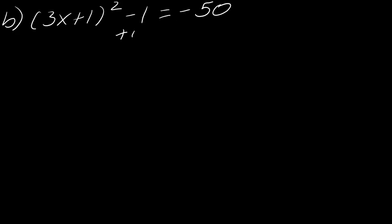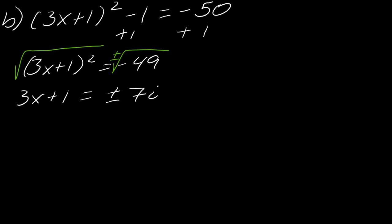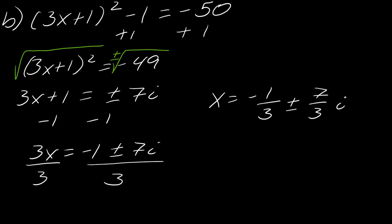Okay, so for this one, so first I've got to add 1 to each side. So now I've got 3x plus 1 squared equals negative 49. So now I'll take the square root of each side. And so now I get 3x plus 1 equals plus or minus 7i. So now I'll just show you how to finish this. And so there's the rest of the solution when I solve for x.